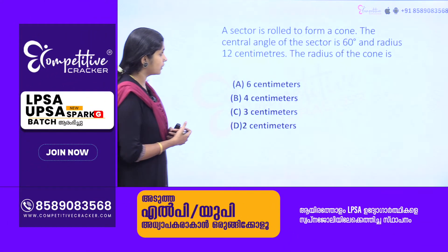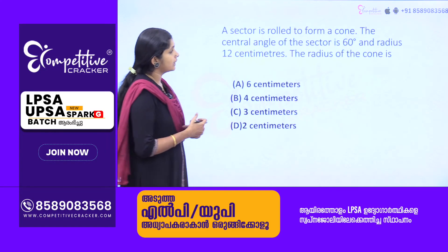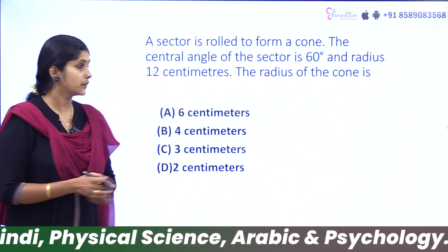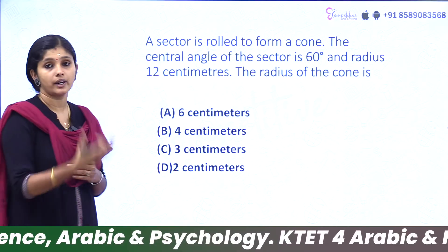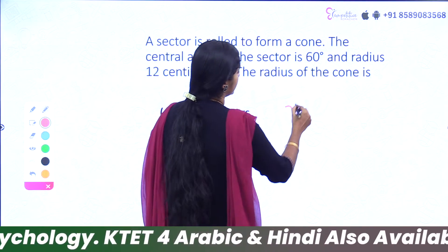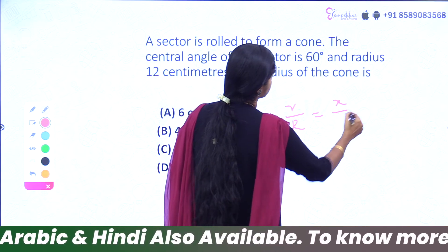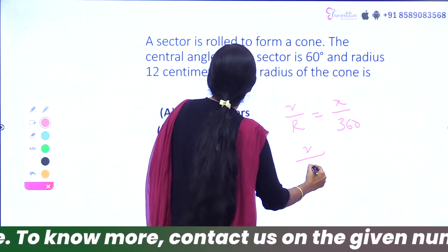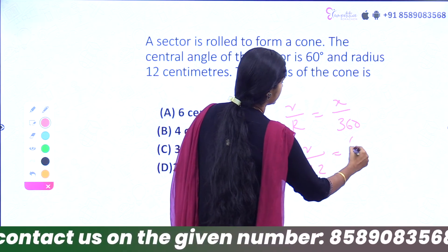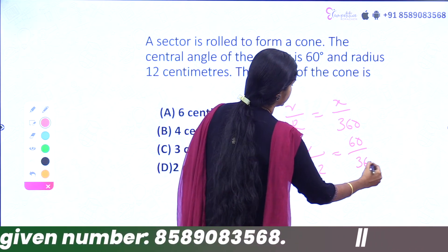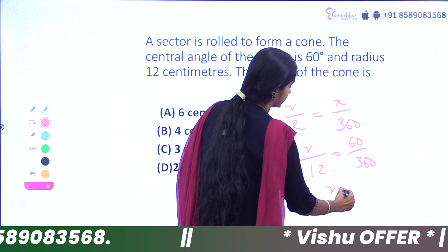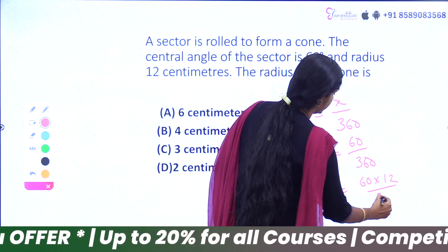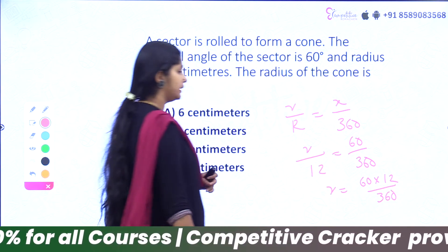A sector is rolled to form a cone. The central angle of the sector is 60 degrees and the radius is 12 centimeters. The radius of the cone can be found using the formula: r divided by capital R equals θ by 360. Here R equals 12 and θ equals 60 degrees.